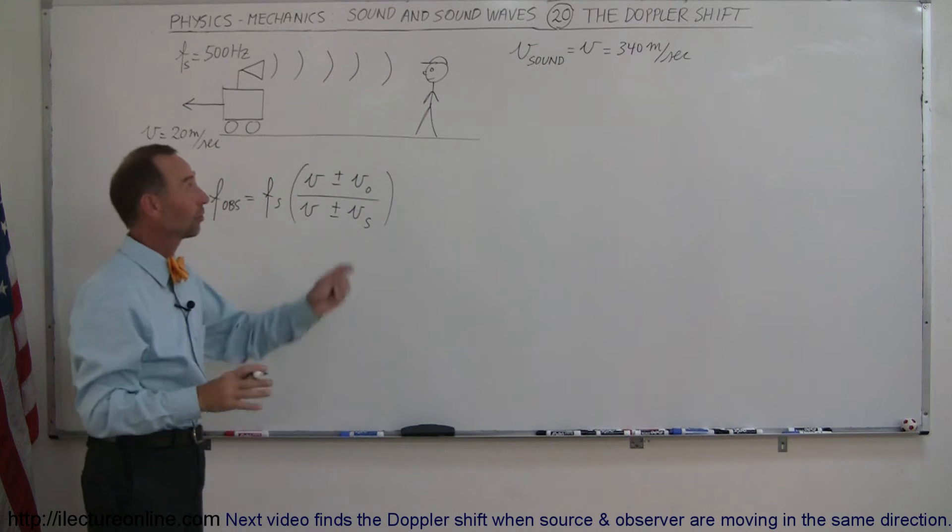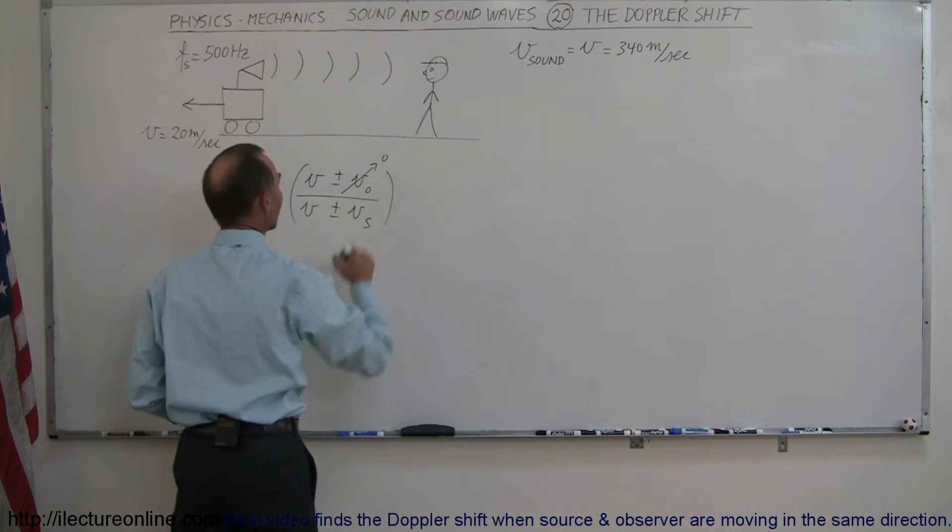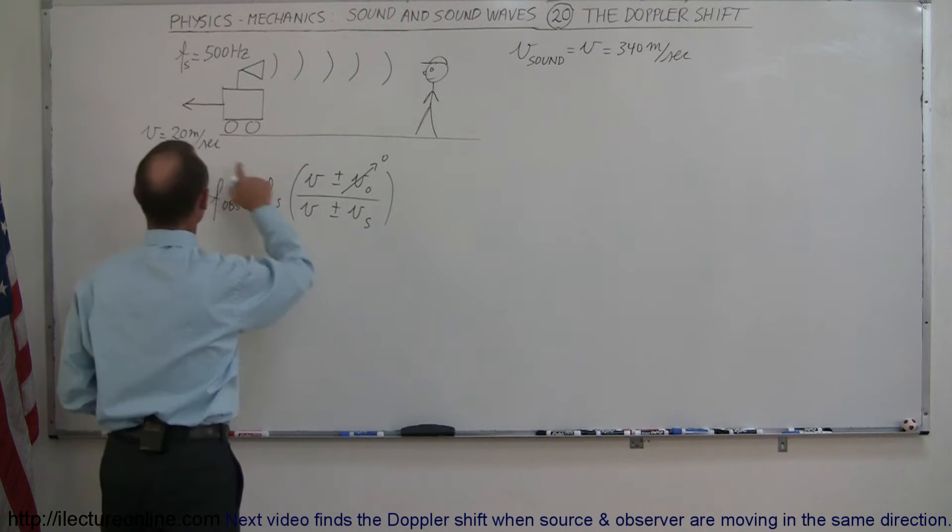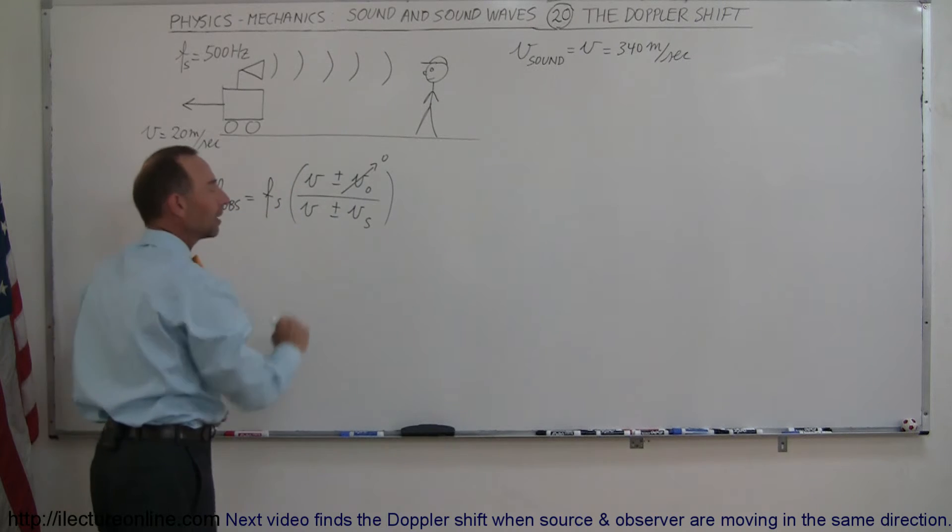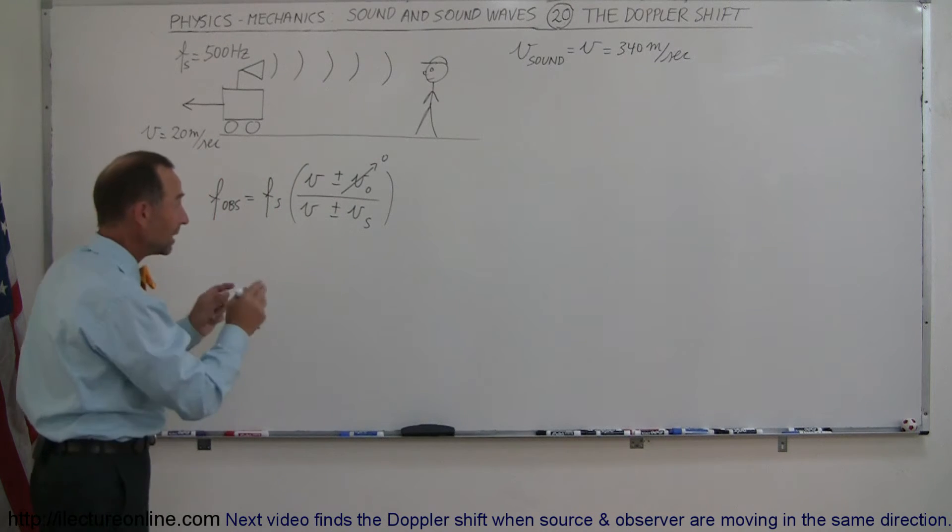Now in this case, the observer is not moving, so we can call that zero. The velocity of the source, even though the source is moving to the left, we're not going to call that negative 20. We're just going to put 20 down.